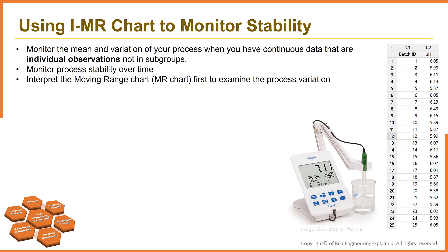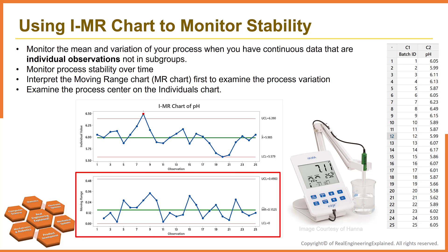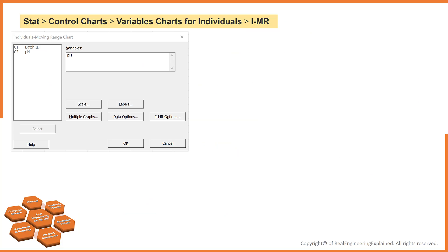You need to interpret the moving range (MR) chart first to examine the process variation. As we can see, none of the points are outside of the control limits and the points display a random pattern. The points vary randomly around the center line and are within the control limits. There is no trend or pattern in this graph. To do this in Minitab: choose Stat, then Control Chart, then Variable Chart for Individuals, and select IMR.